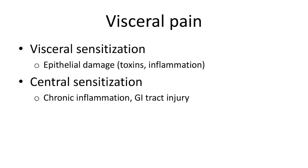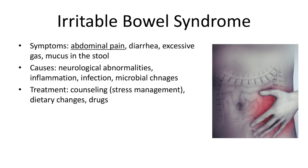In the first case, sensitization originates in the gut and can result from epithelial damage by toxins, antigens, or inflammation that excessively activates these pain receptors. In the second case, sensitization can also occur in the central nervous system, which is characteristic of chronic inflammation or injury in the GI tract. This can lead to changes in receptors and channels and affect signal transmission. As irritable bowel syndrome is linked to triggers by stress, treatment includes counseling and stress management, dietary changes, and treatment by certain drugs.